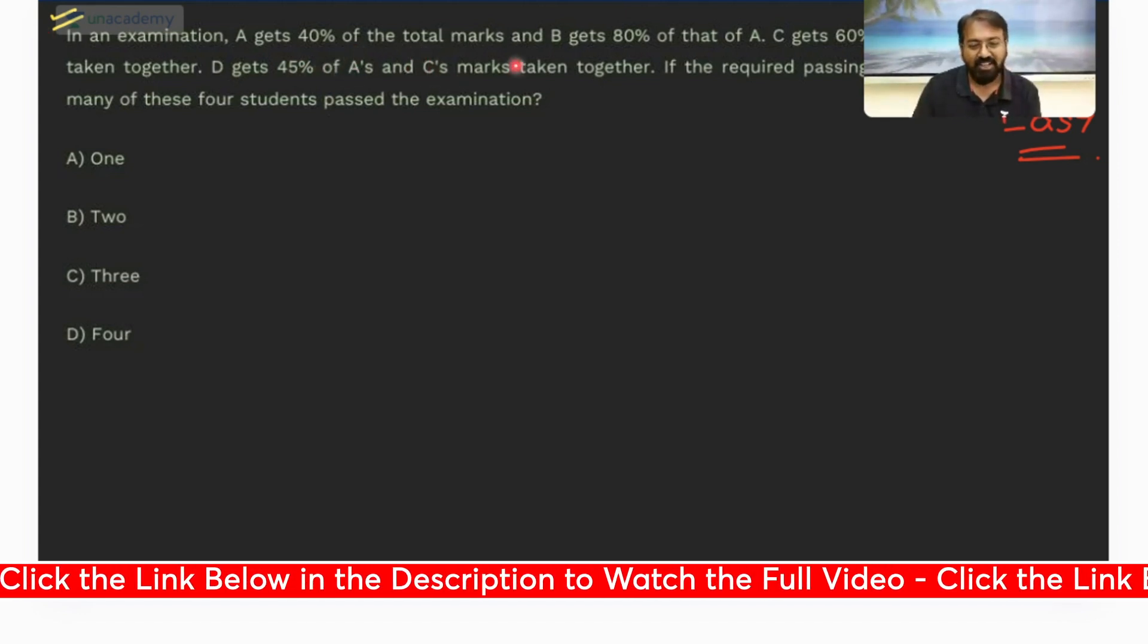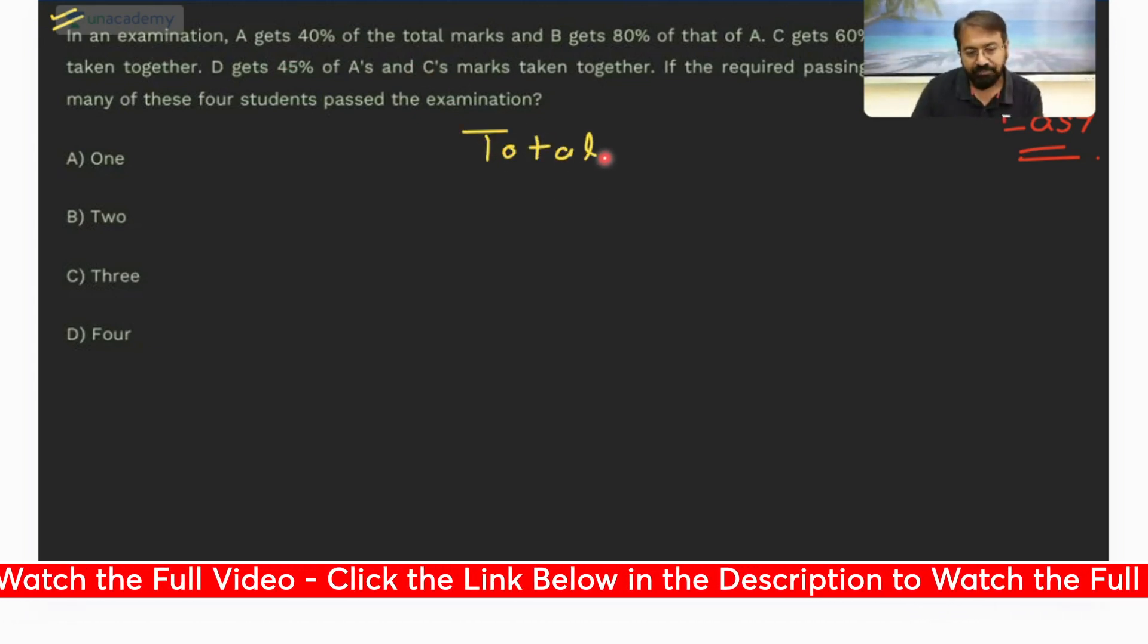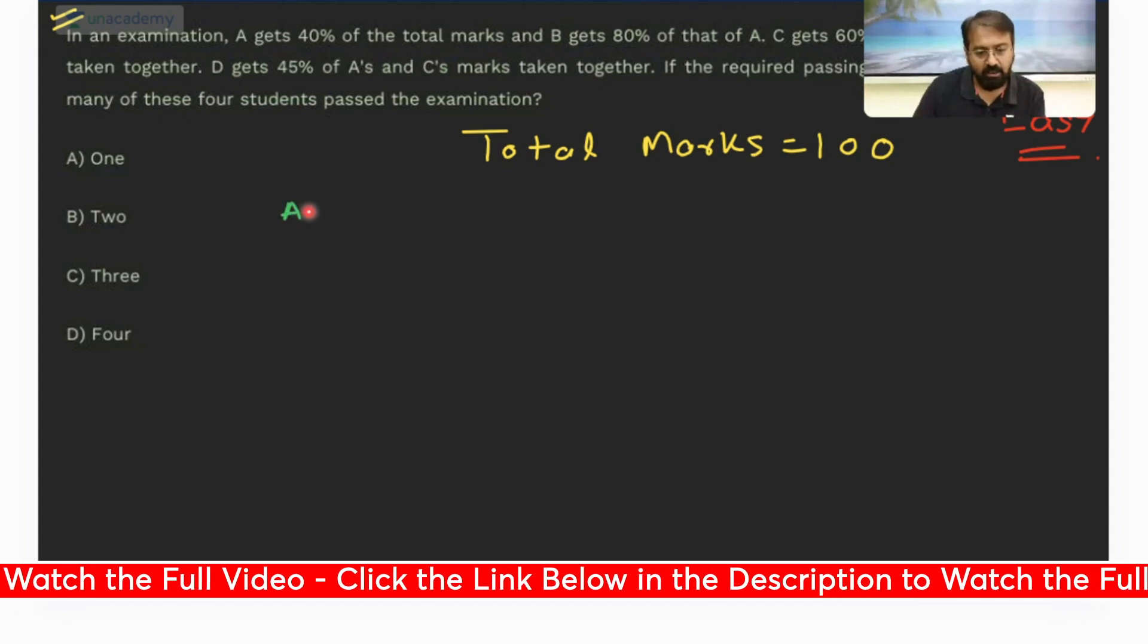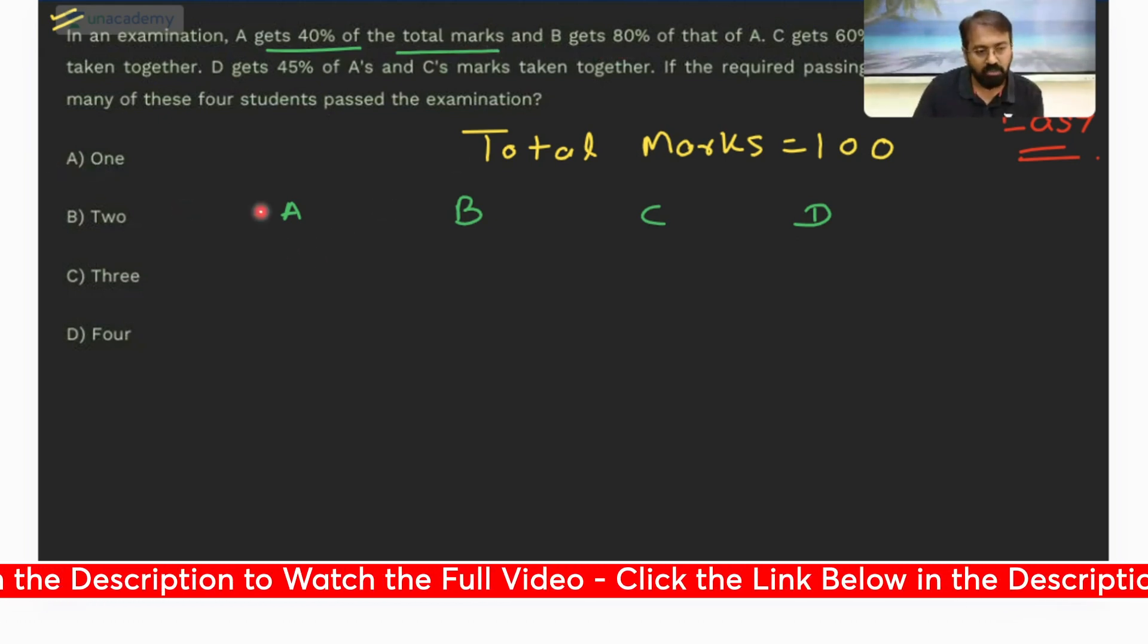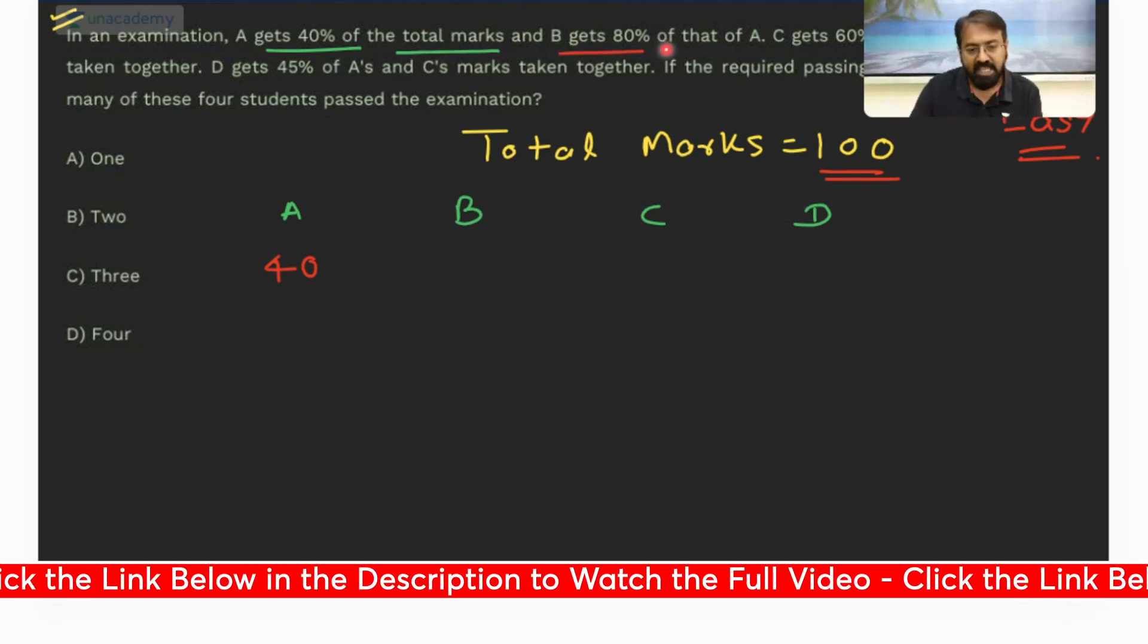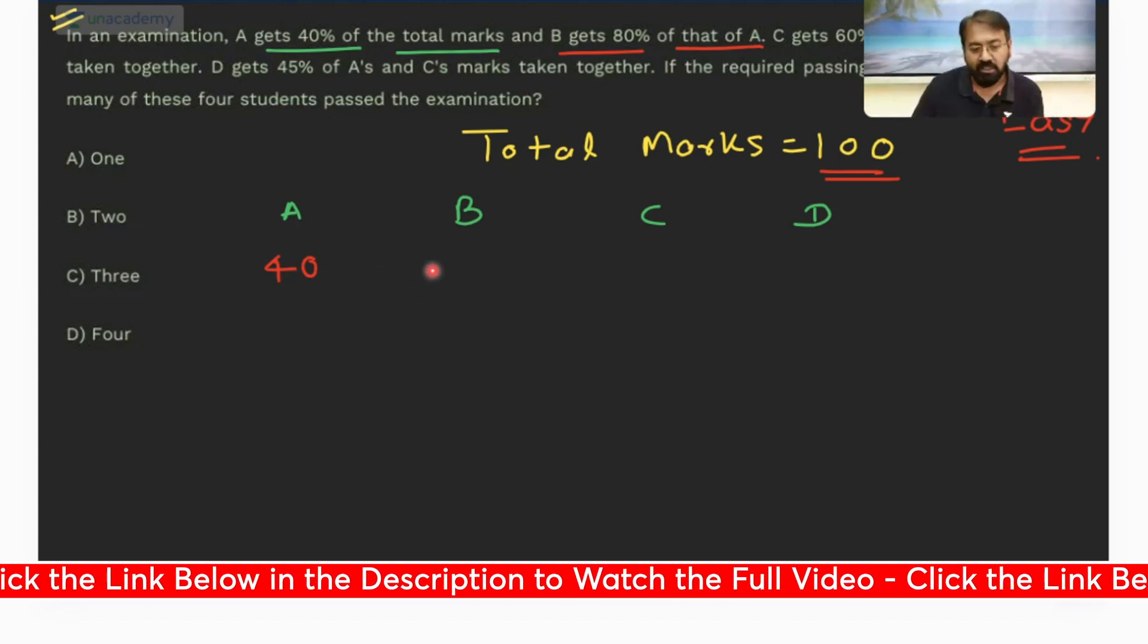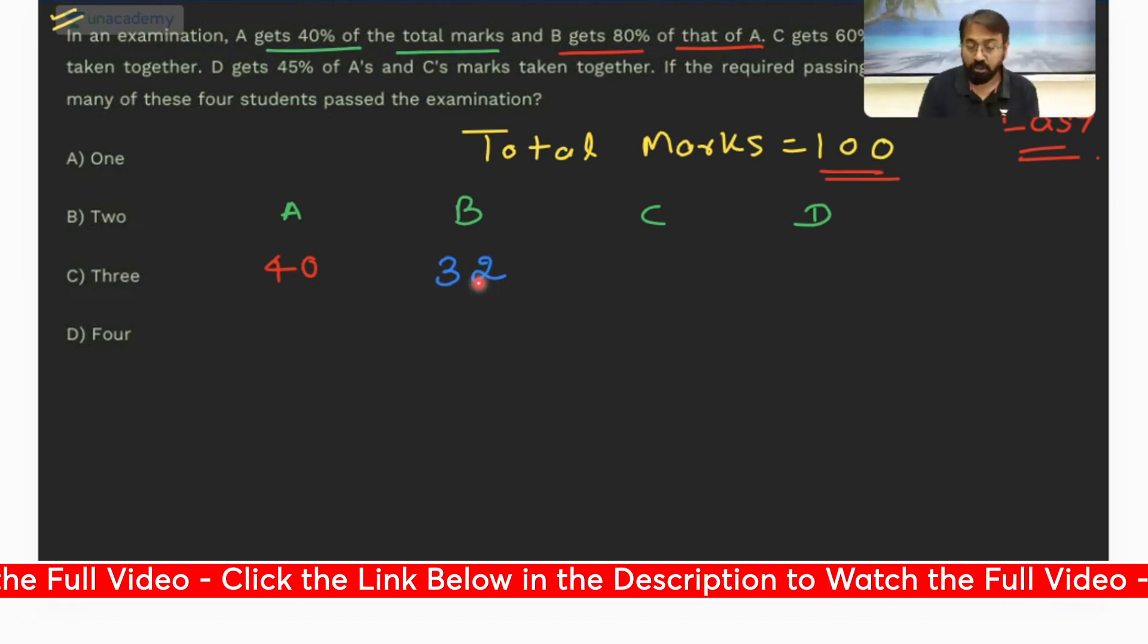The only thing is you had to define the values properly. It's about an examination where we can assume the total marks as 100, so that will simplify our task. Now there are four candidates A, B, C, and D. A gets 40% of total marks, so the marks received by A should be 40. And B gets 80% of that of A, so whatever is the score of A, 80% of that is scored by B.